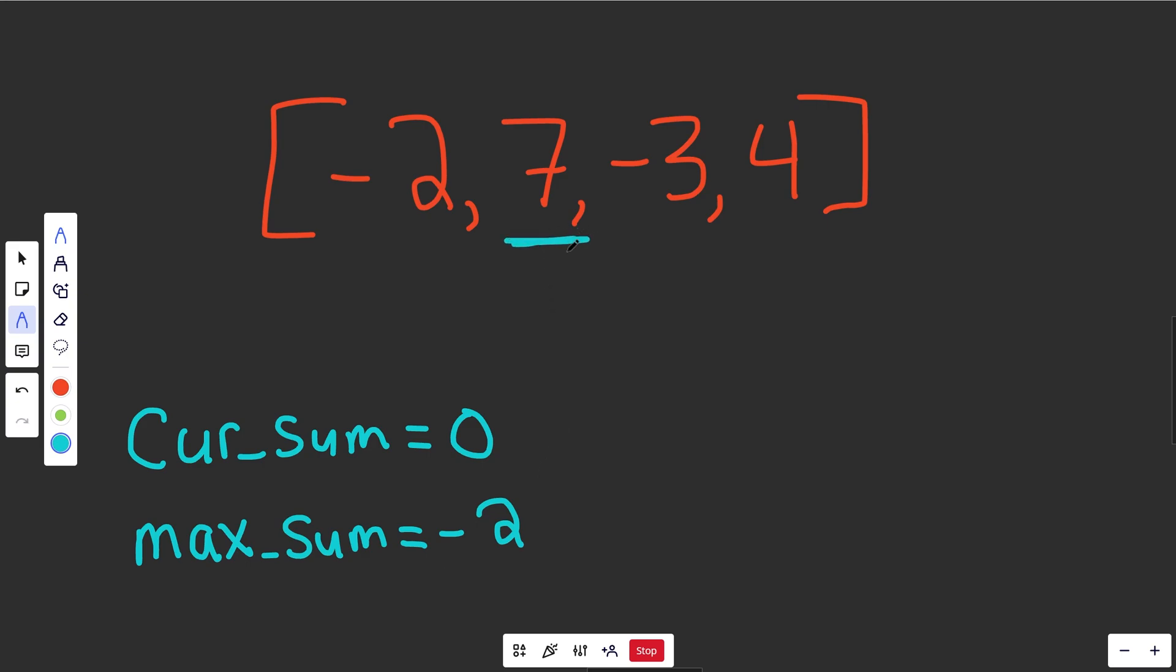We look at the next value, which is 7. 7 plus our current sum of 0 is going to be 7. And 7 is definitely better than minus 2. That is bigger. So the max that we saw so far is 7.